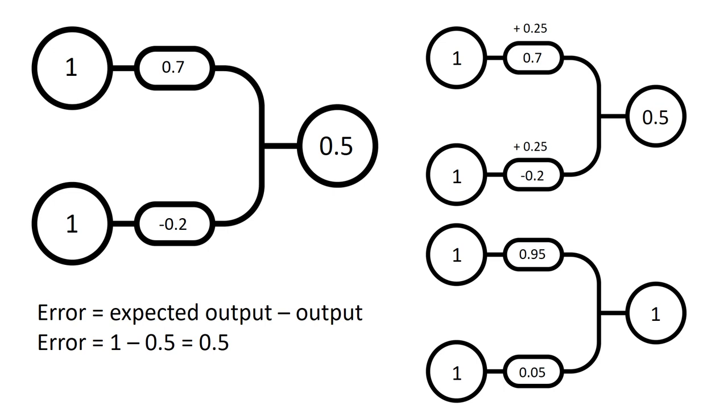You evaluate the error, then you update the weights by how much they are responsible for this error. Applying that to this example, we know the output should be 1, but it outputs 0.5.